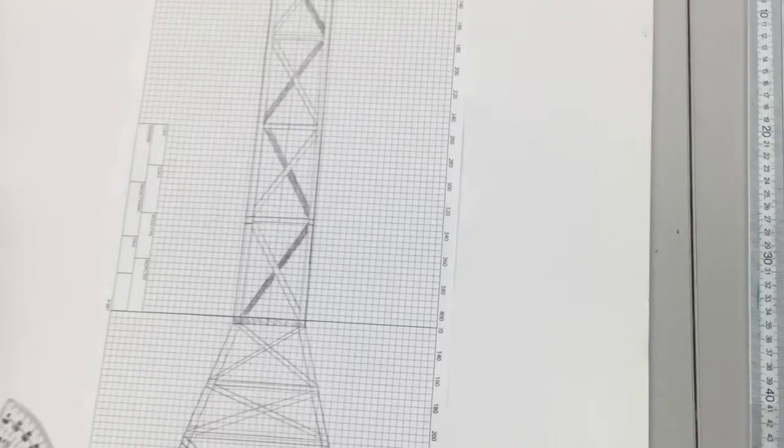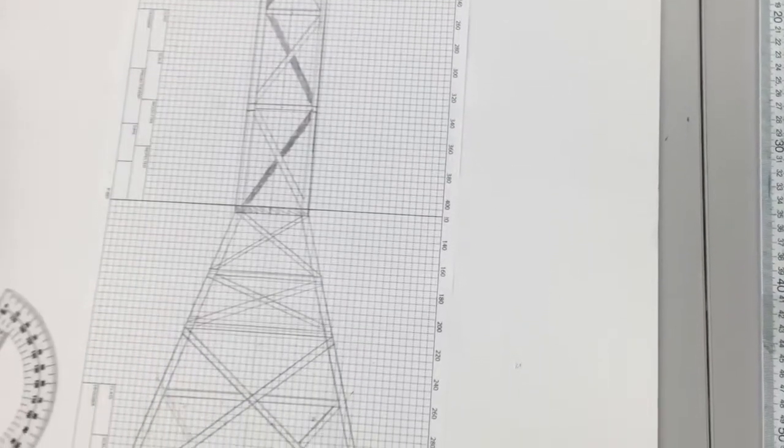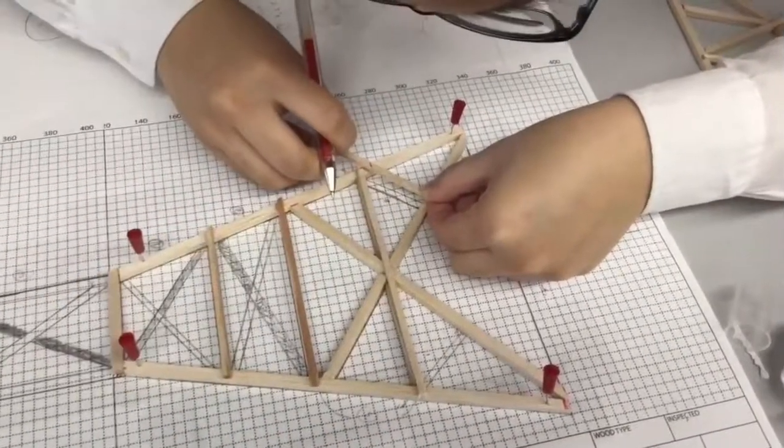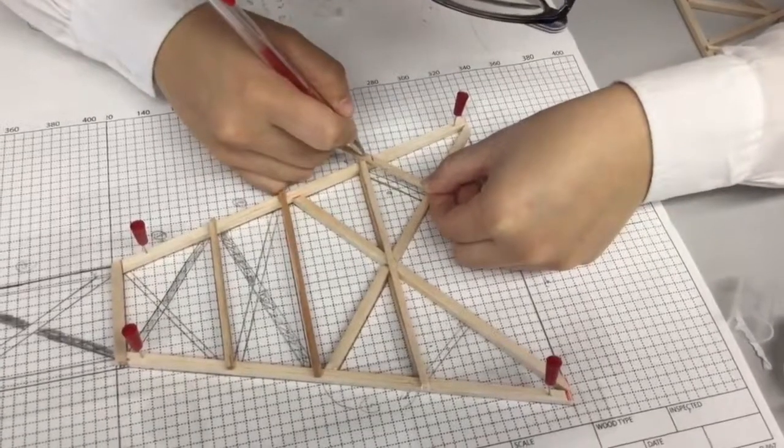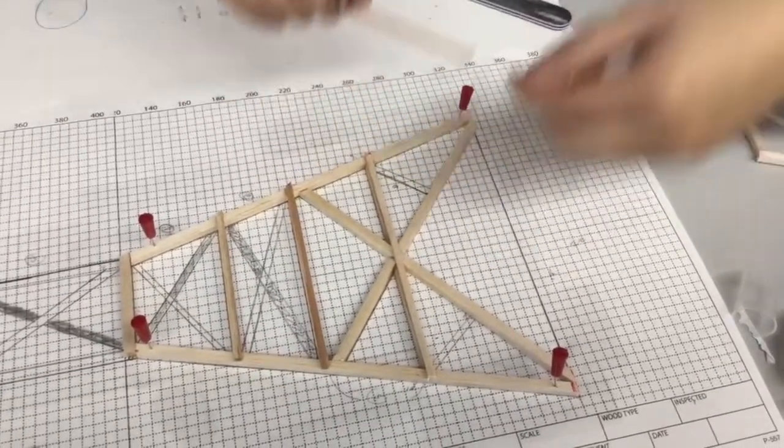Next, we made our final drawing on the board to model our tower after. Now it is time to begin construction. We first had to cut out the sticks to certain lengths to fit our model.